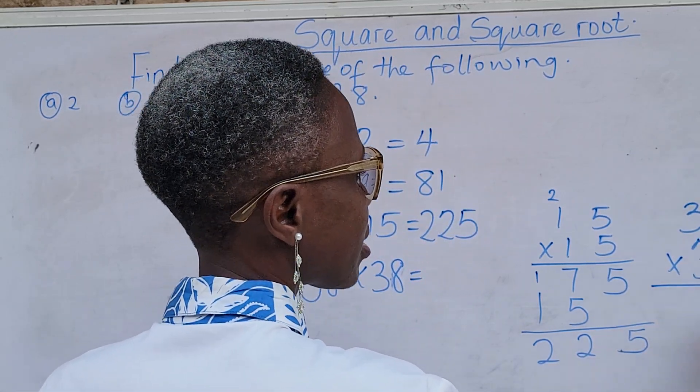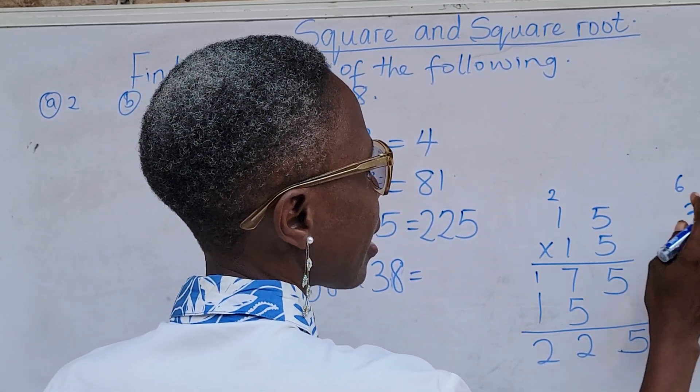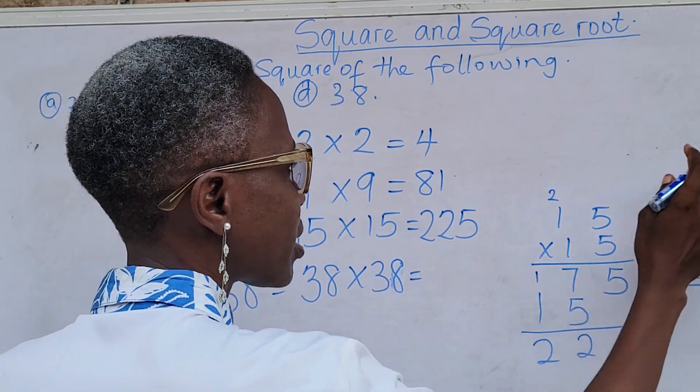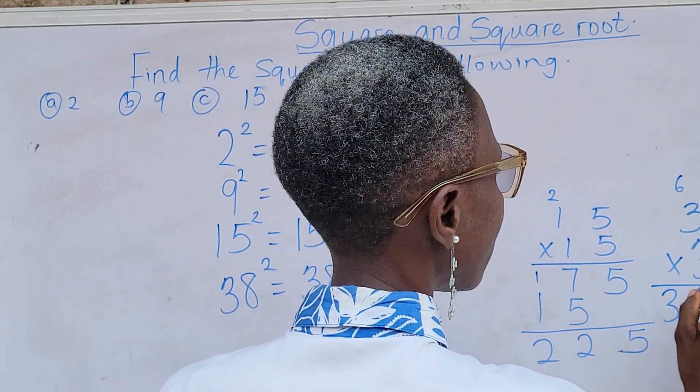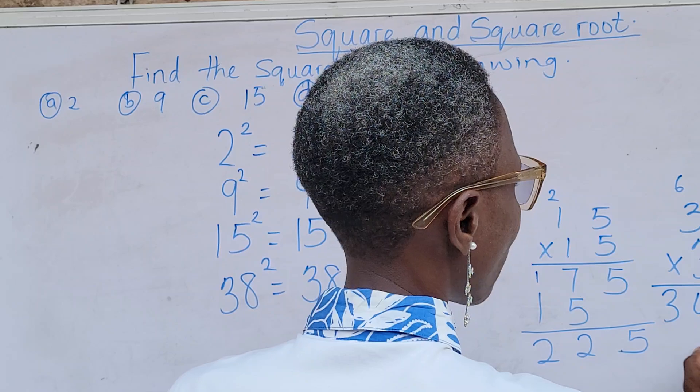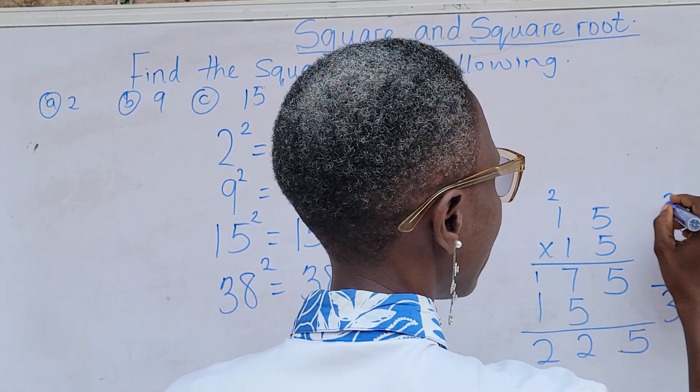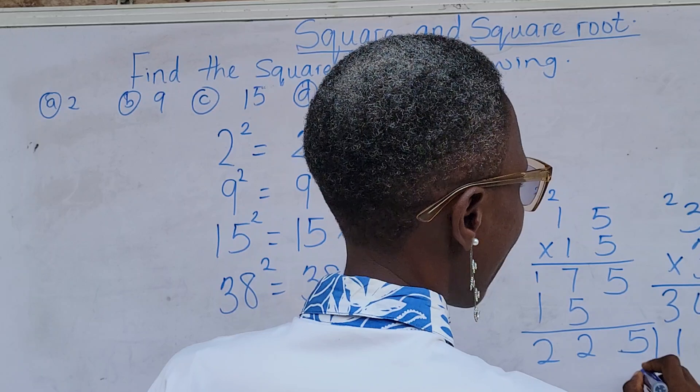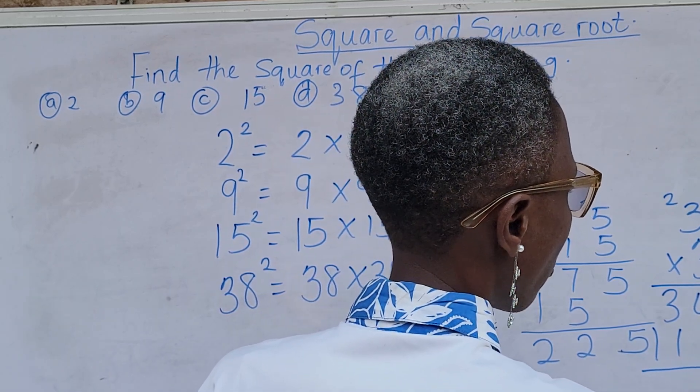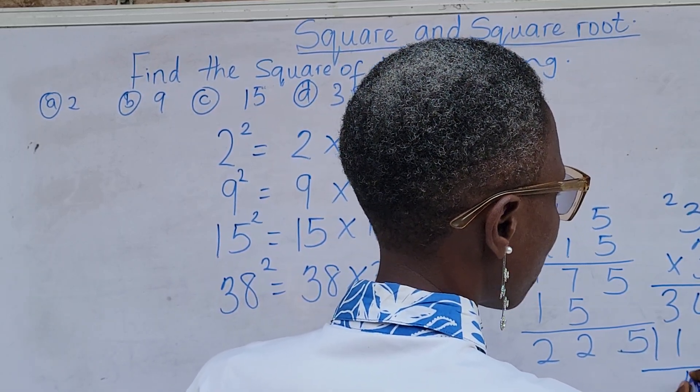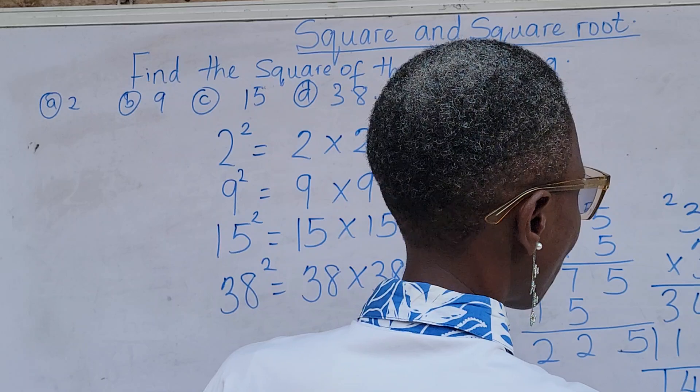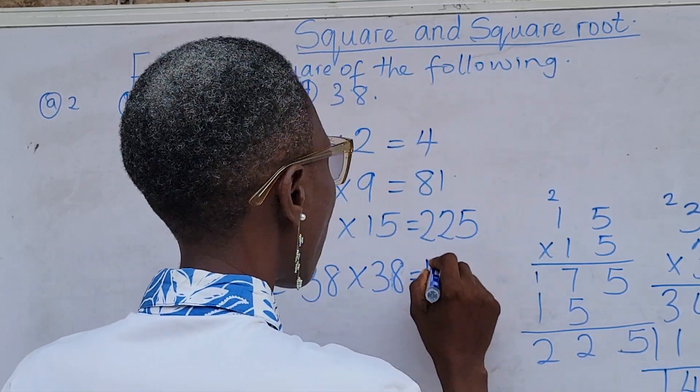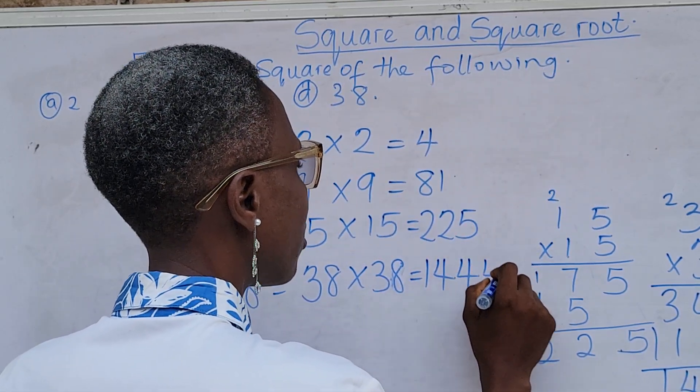8 times 8 is 64. 8 times 3 is 24 plus 6, that's 30. 3 times 8 is 24. And then, 3 times 3 is 9 plus 2, that's 11. Then we have 4, 4, 4 and 1. So, it is 1,444.